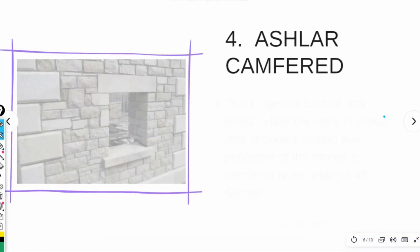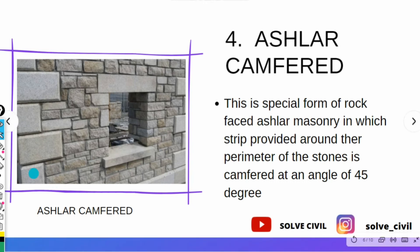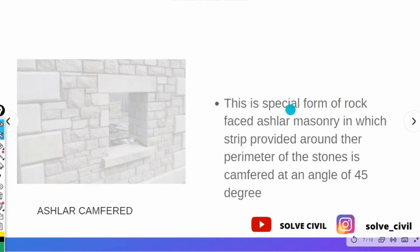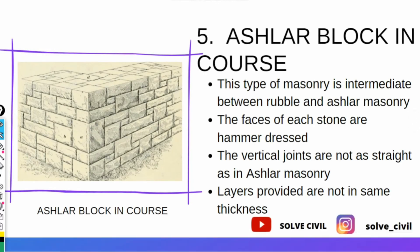The next kind of masonry is ashlar camford. This is a special form of rock face ashlar masonry in which the strip provided around the perimeter of the stone is chamfered at an angle of 45 degrees. The sides are chamfered at an angle of 45 degrees.